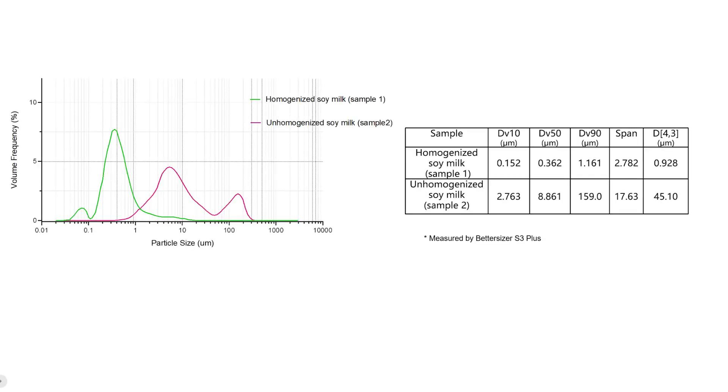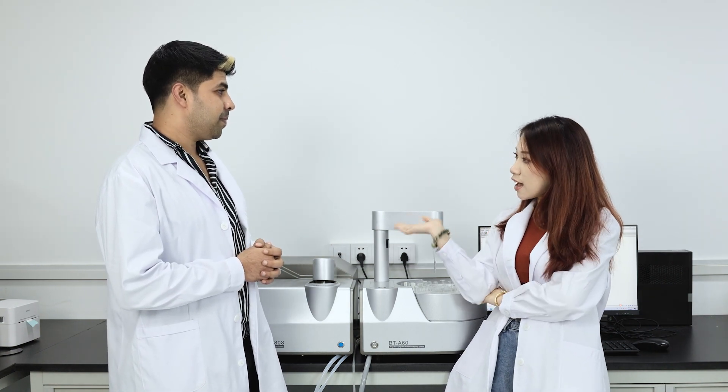Comparing to the unhomogenized soya milk sample, it is evident that sample 1 yielded a decrease in average particle size, proof that a finer and more uniform liquid has been achieved by the homogenization process. The dynamic image analysis function of the BetterSize F3 Plus can easily identify the oversized globules and protein particles.